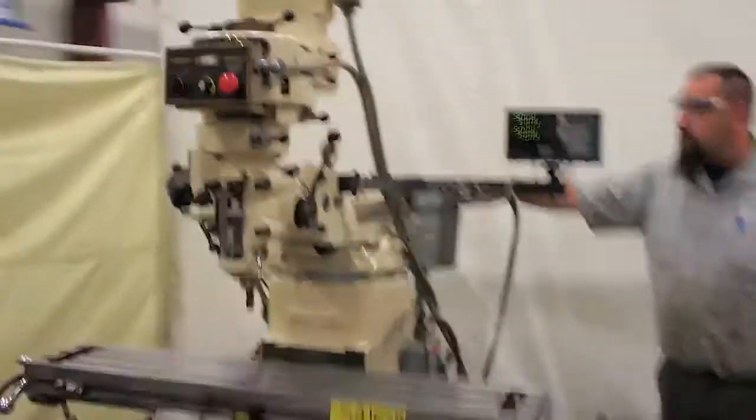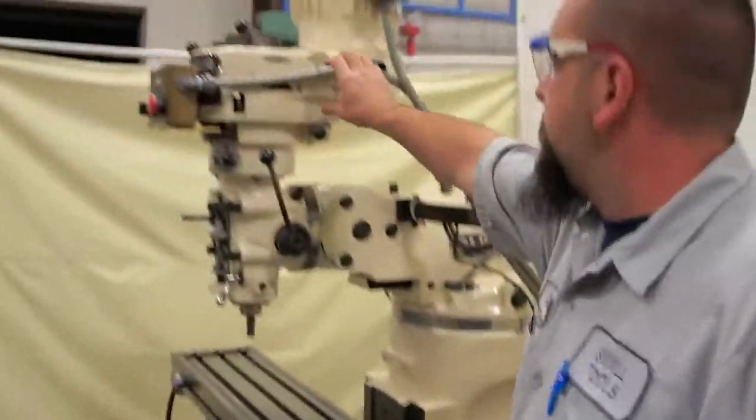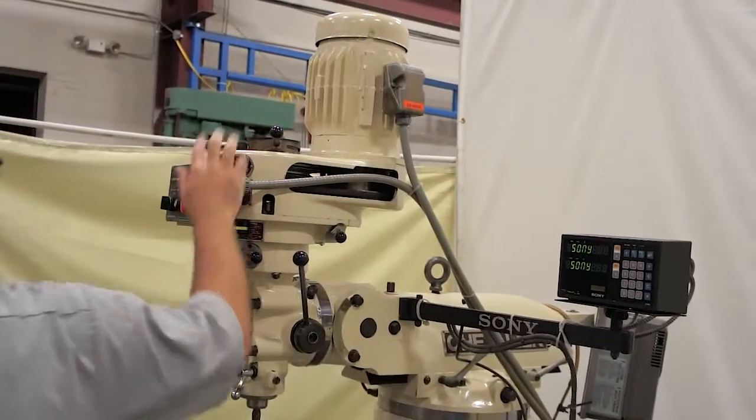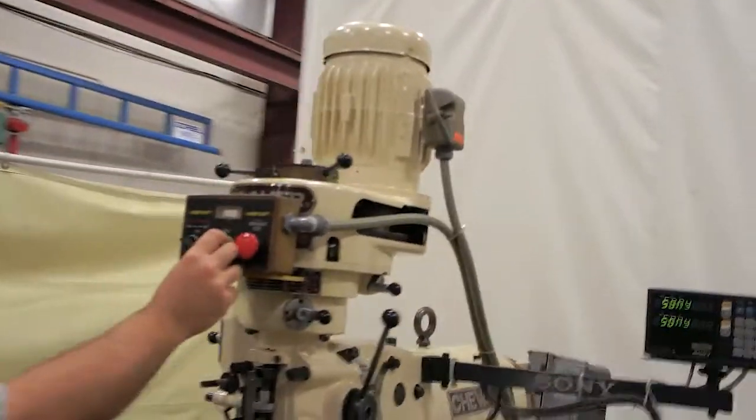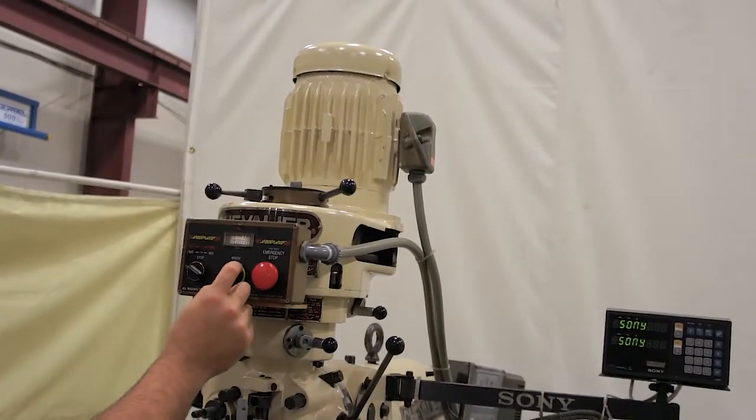This is the controller on the back. What this means is that you get rid of your step pulleys, you have one main belt, and the speed of the motor is controlled by the first switch right here. As you go up, your RPMs go up.